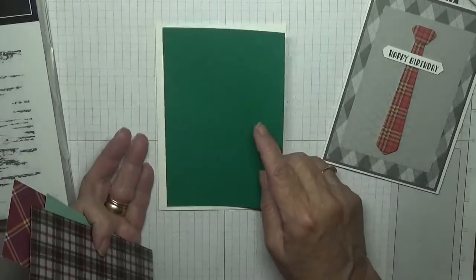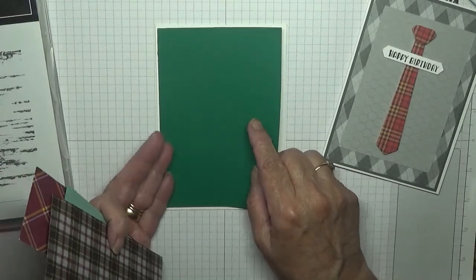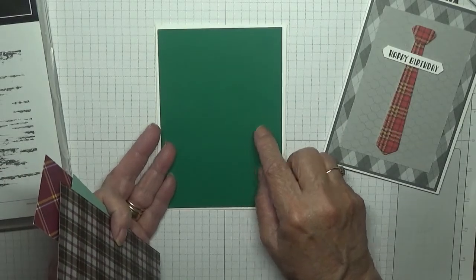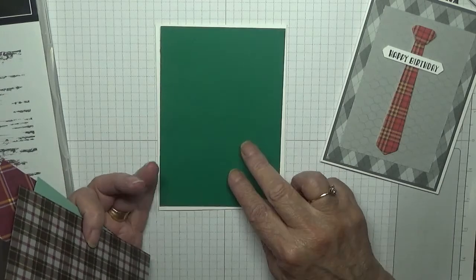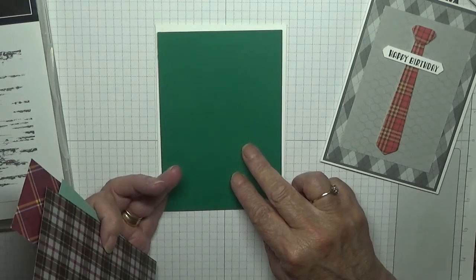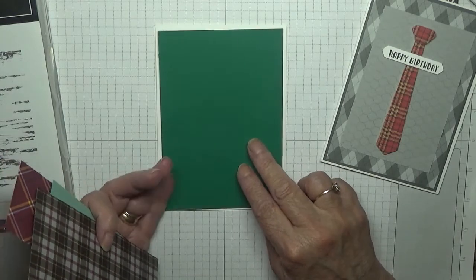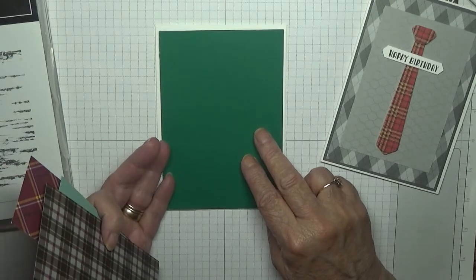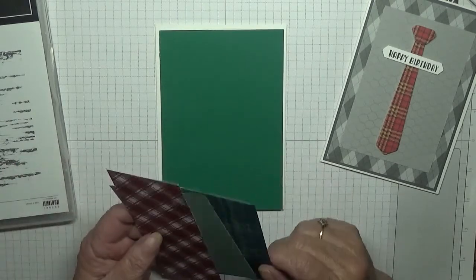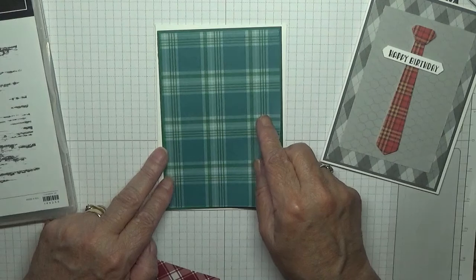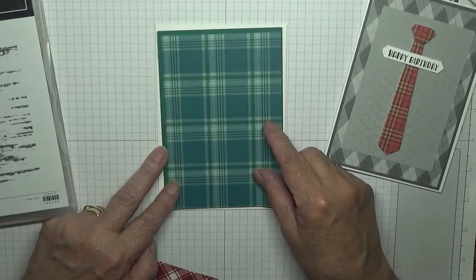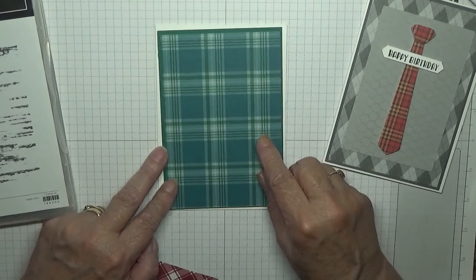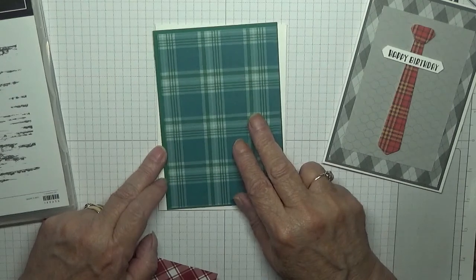Some shaded spruce - I haven't used this since Christmas I think. This is three and seven eighths by five and five eighths. I have some retired paper from Tartan Plaid or Plaid Tidings - anyway, it's retired plaid paper.